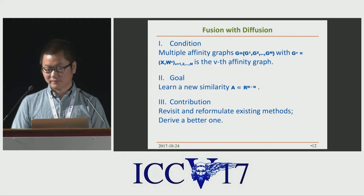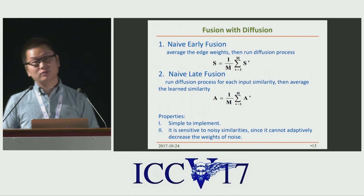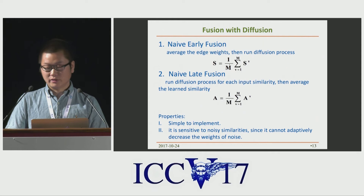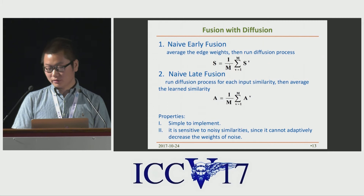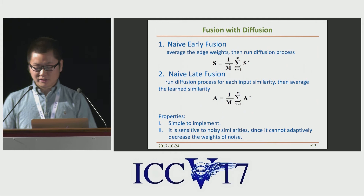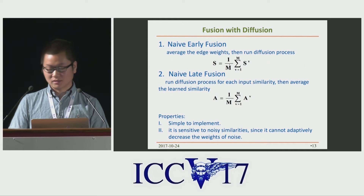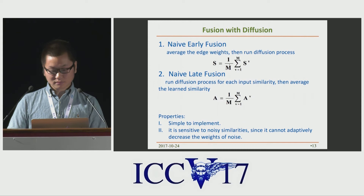The first two commonly used solutions are naive fusion. Naive early fusion first averages the input similarities, then runs the diffusion process on the combined graph. Naive late fusion runs the diffusion process for each individual input similarity, then averages the learned similarities. It is very simple to implement. However, naive fusion is very sensitive to noisy similarities since it cannot adaptively decrease the weight of noisy similarities.